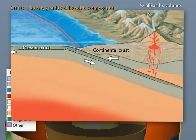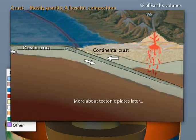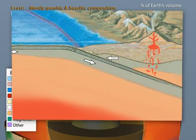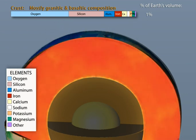The crust is often mistaken for the tectonic plates. However, the crust is just the top part of the tectonic plates. We'll return to that in a moment, but first back to the three layers.